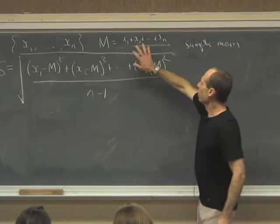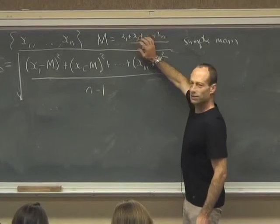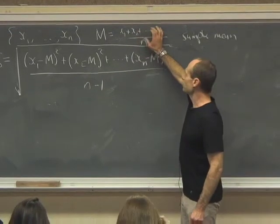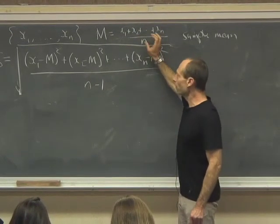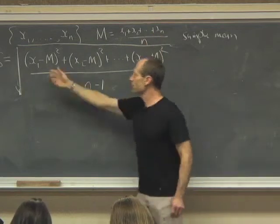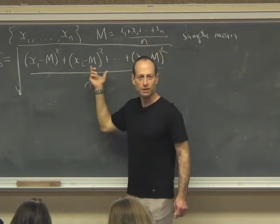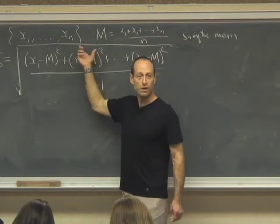When I calculate the sample mean, the sample mean of a list has a special property. The sample mean is the number that minimizes the sum of the square deviations. It's the number from which the sum of the square deviations is smallest.